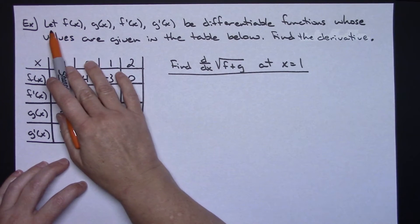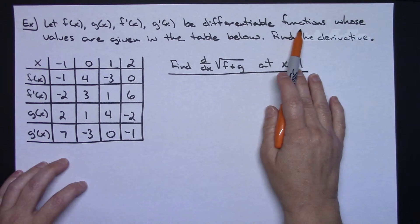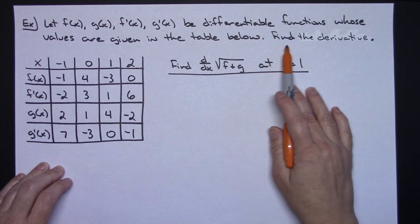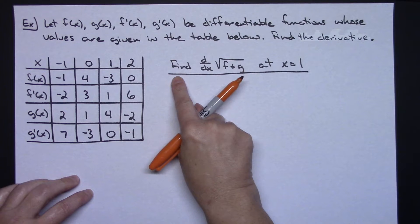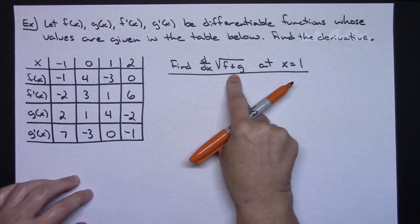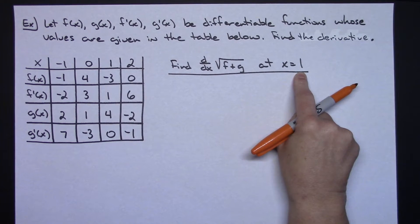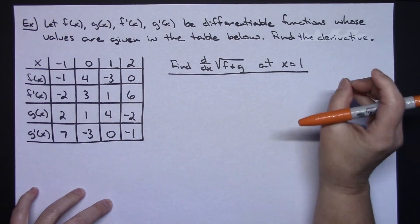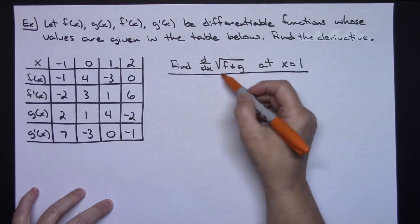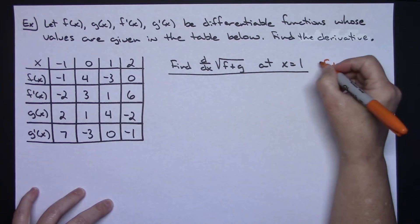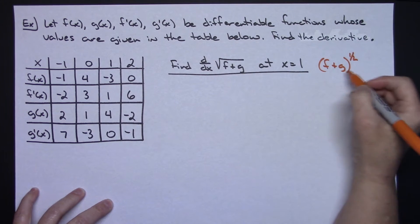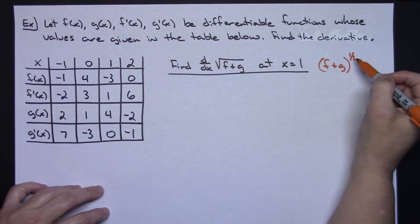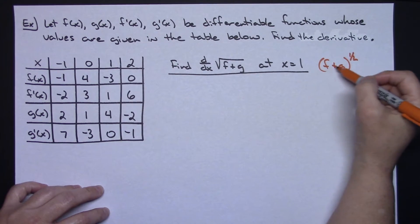Let's say they give you f(x), g(x), f'(x), and g'(x) as differentiable functions whose values are given in a table — and then they're just going to tell you to find the derivative. Find the derivative of the square root of f plus g at x equals 1. First, I've got to work on taking the derivative of this without knowing what the f and g functions are. What I'm going to do is think of this as (f + g) to the one-half power — take that radical and make it an exponent — so I can see this is going to be that power rule including a chain, taking the derivative of the power rule and leaving the inside alone.